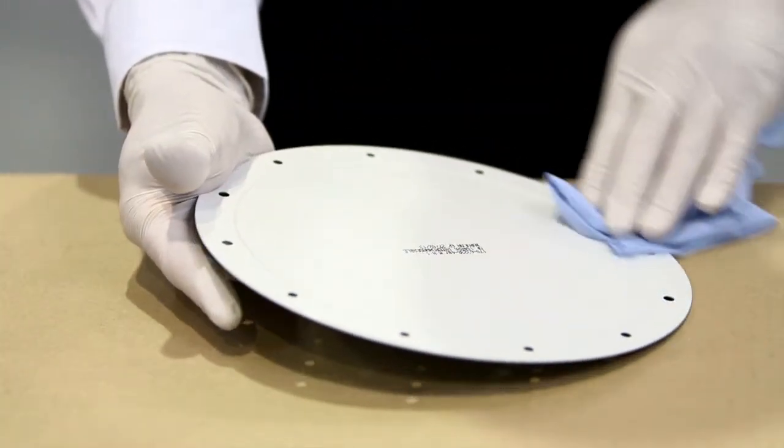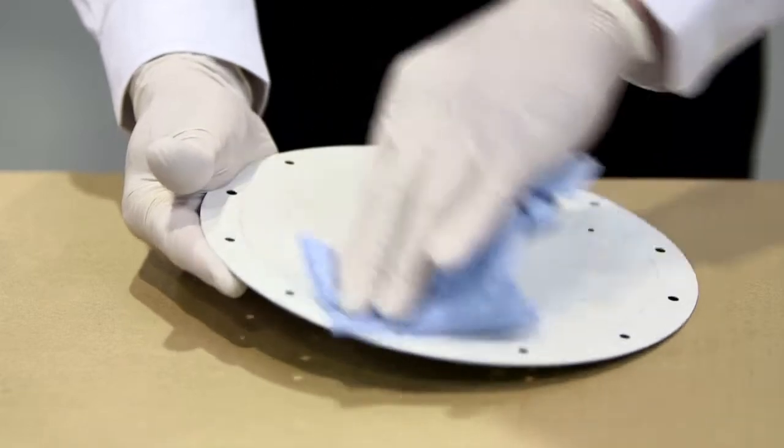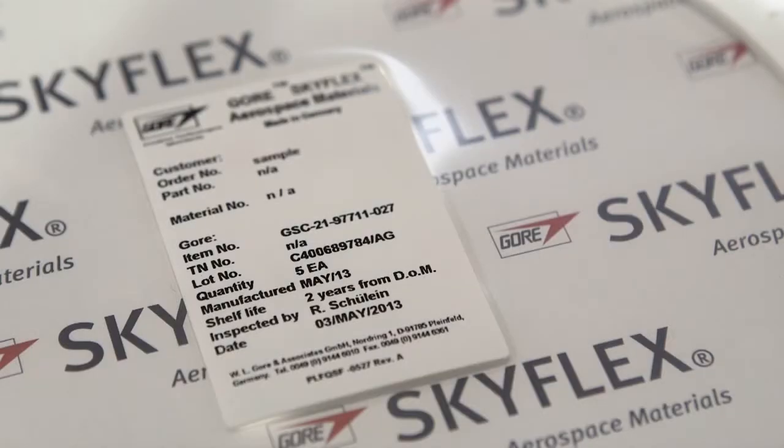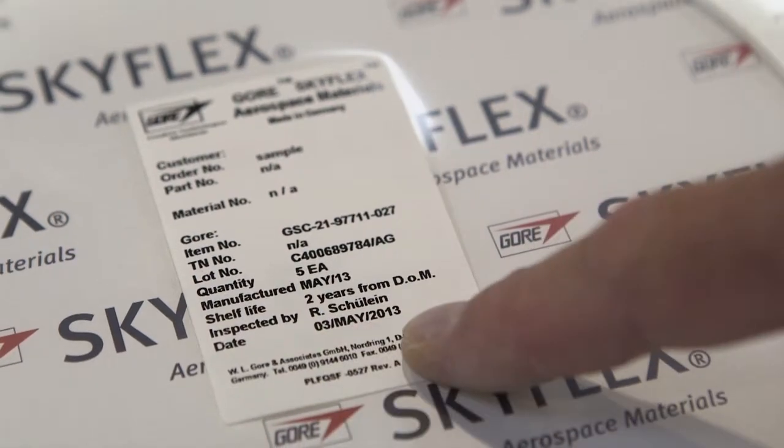Surfaces should be cleaned with an appropriate cleaner such as isopropyl alcohol and cloth. Check the shelf life and part number prior to use.